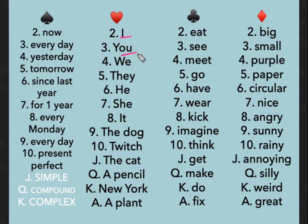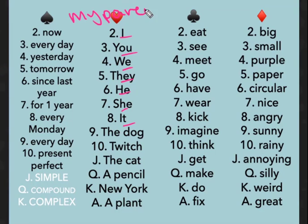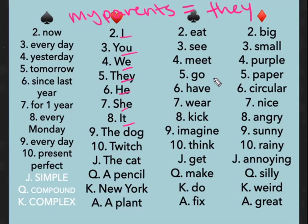When we use I, you, we, they, he, she, and it, we can take out the subject. So for example, my parents equals they. My parents equals they. So we can say 'my parents' or we can say 'they.'